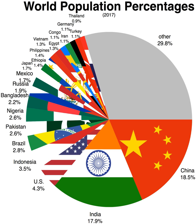Areas that form integral parts of sovereign states, such as the countries of the United Kingdom, are counted as part of the sovereign states concerned. Not included are other entities, such as the European Union, that are not sovereign states, and independent territories that do not have permanent populations, such as various countries' claims to Antarctica.